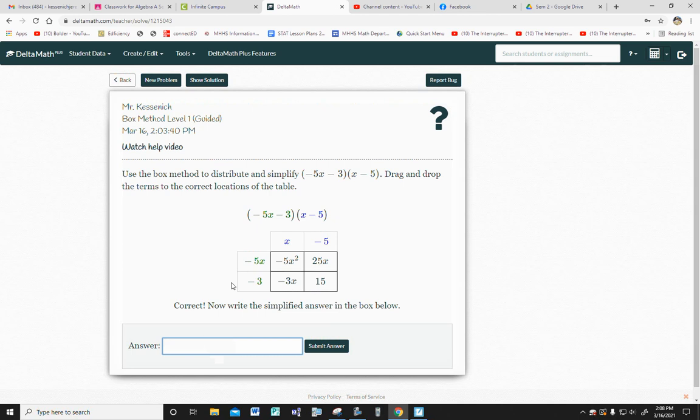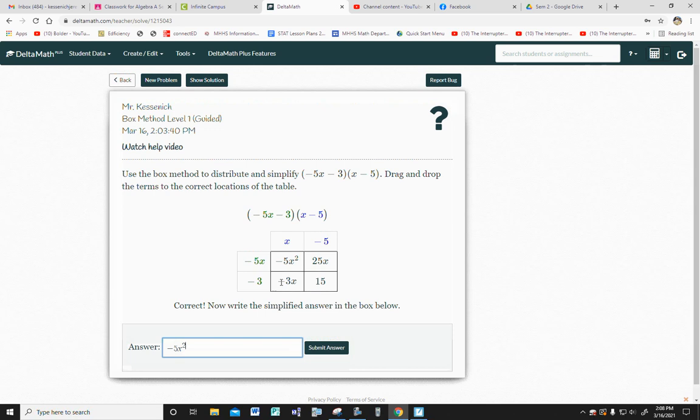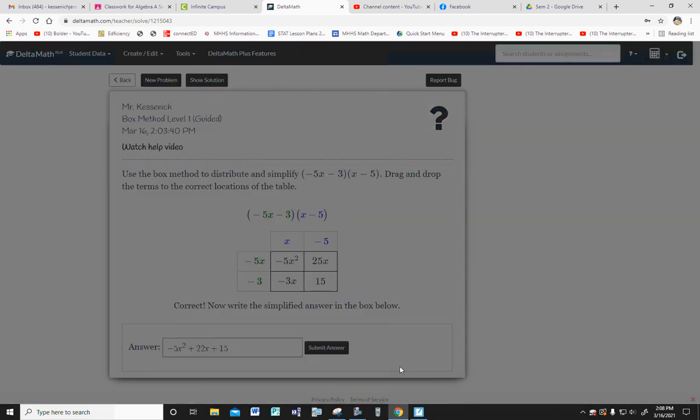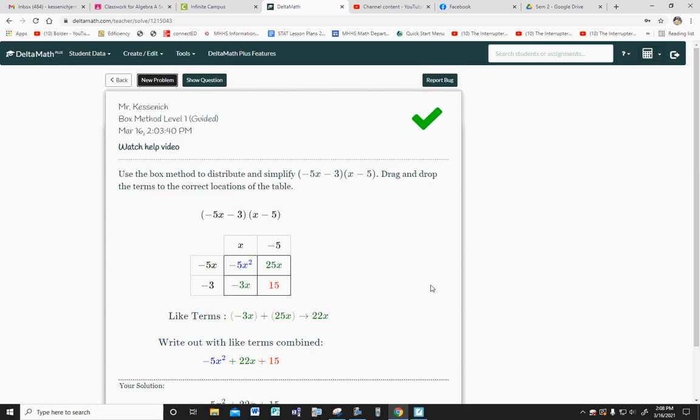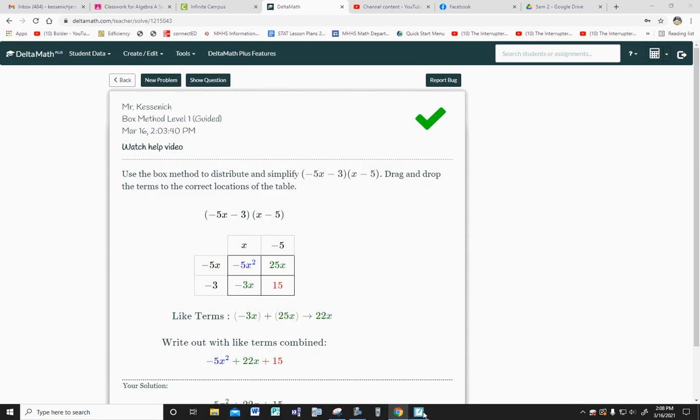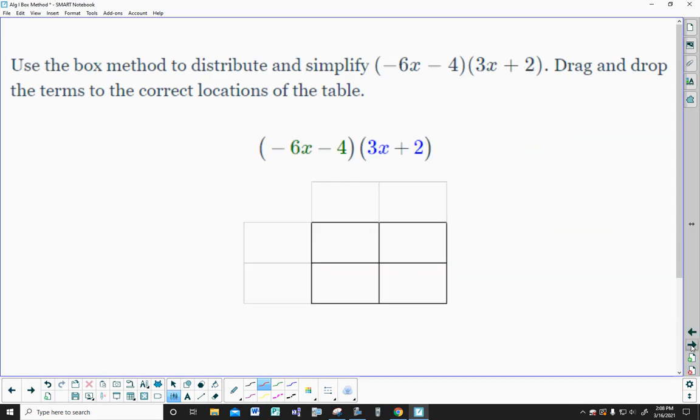So you have minus 5x squared. Then those two would be 22x. So plus 22x. And then plus 15. There we go. Okie doke.